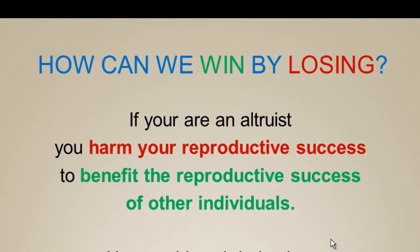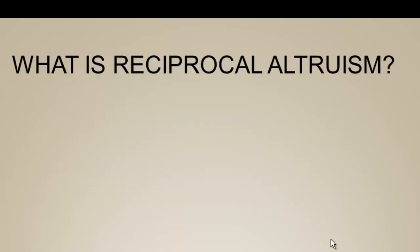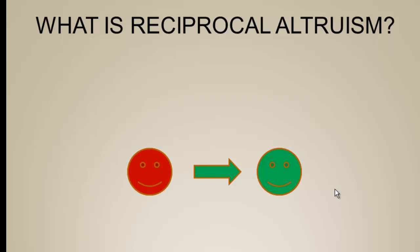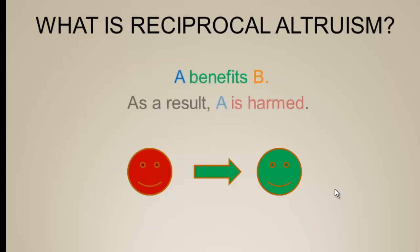How can we get ahead when we're constantly giving up reproductive benefits to others? Reciprocal altruism is a second solution — earlier we looked at Hamilton's rule. Here's the way reciprocal altruism works: we start with two agents, blue and orange, also called A and B. In an altruistic act, blue benefits orange — we turn orange green to show the benefit has been received — and as a result blue is harmed, turned red. So A has benefited B, and as a result A has been harmed.